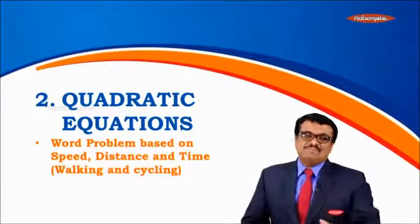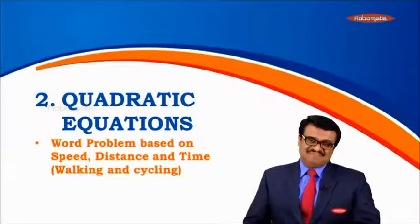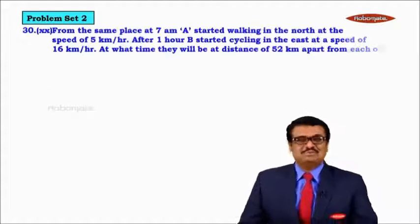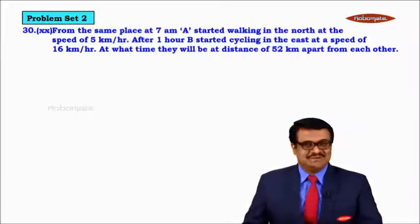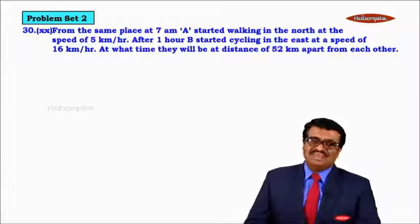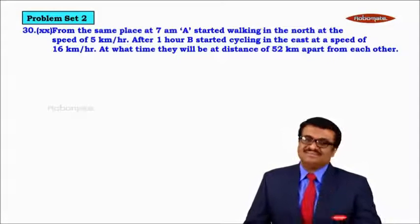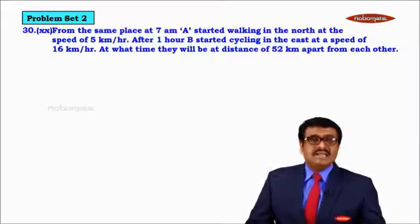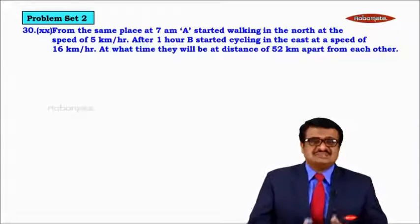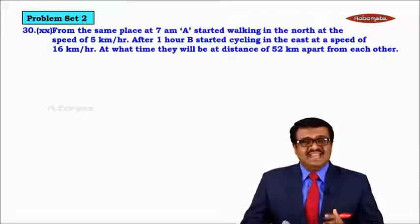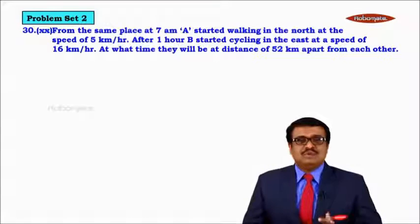This module covers a word problem based on speed, distance, and time — a very interesting sum based on walking and cycling. The question is from problem set 30, main question, sub-question number 20. From the same place at 7 a.m., A started walking north at the speed of 5 kilometers per hour. After one hour, B started cycling east at the speed of 16 kilometers per hour. At what time will they be at a distance of 52 kilometers apart from each other?